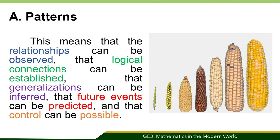This means that relationships can be observed, that logical connections can be established, that generalizations can be inferred, that future events can be predicted, and that control is possible.